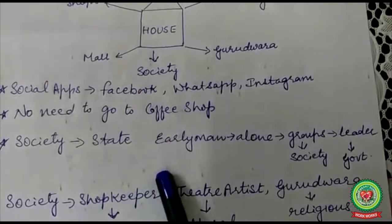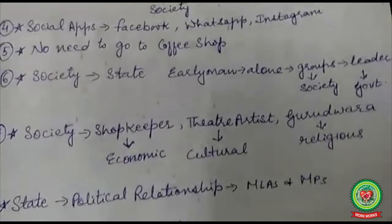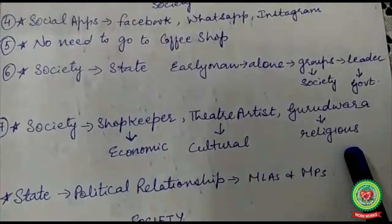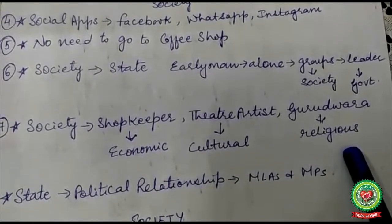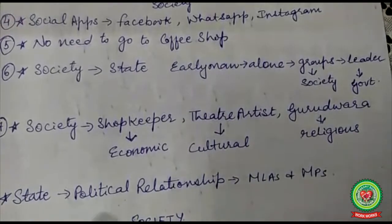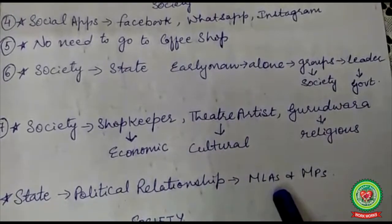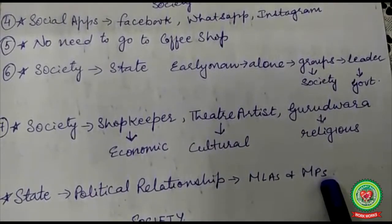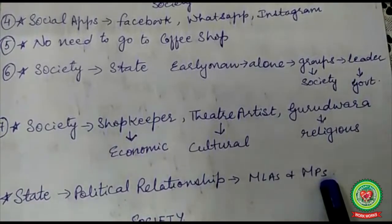The second point is: society is wider in scope than the state. Society is formed by all types of relationships — economic, cultural, and religious. In your locality you have shopkeepers, theater artists, and gurudwaras, representing economic, cultural, and religious relationships. But in the state, there are only political relationships — MLAs, MPs, and councillors, the people in power.